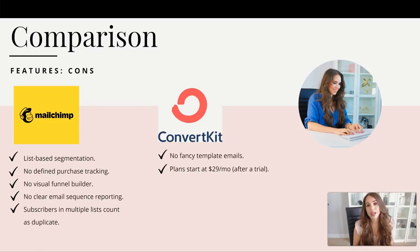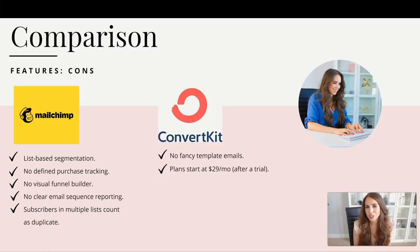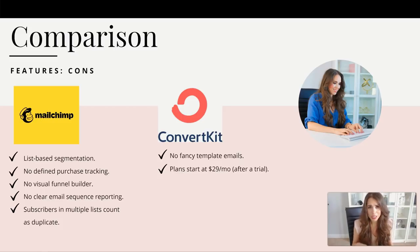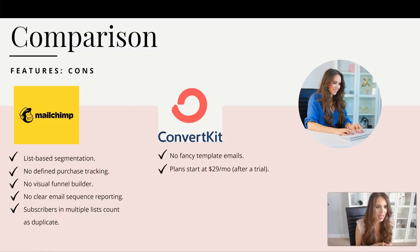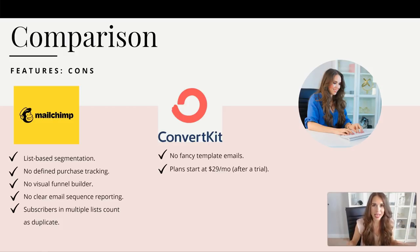There's also no defined purchase tracking in MailChimp. I'm sure there are multiple integrations and some third-party Zapier tools you can use, but internally there is no defined purchase tracking. There's also no visual funnel builder — while you do have sequences, there isn't really a way to bring it all together into automations.